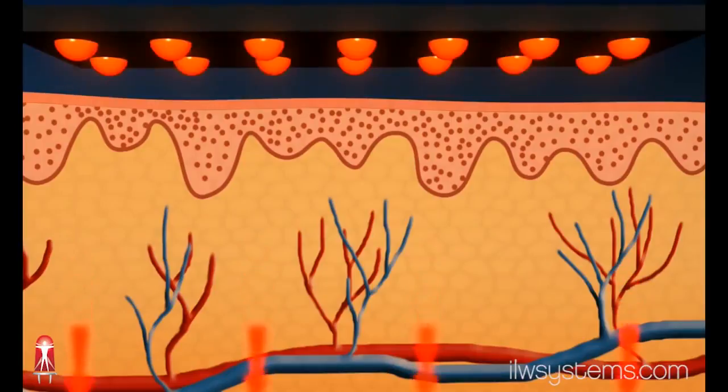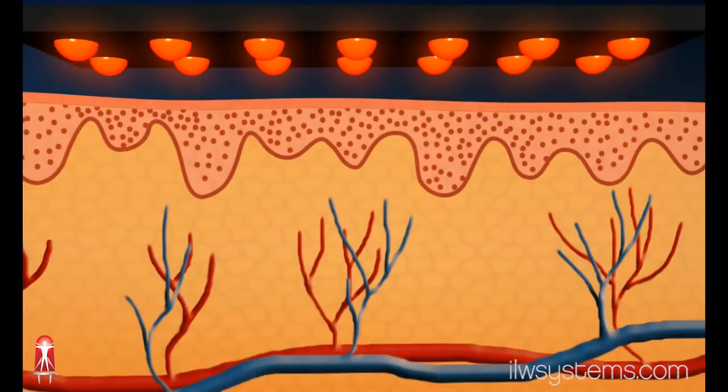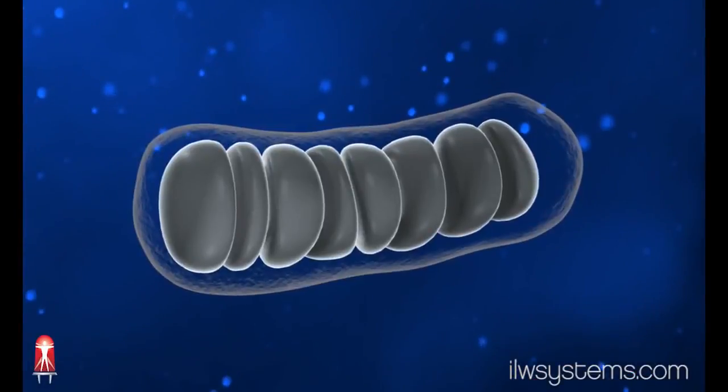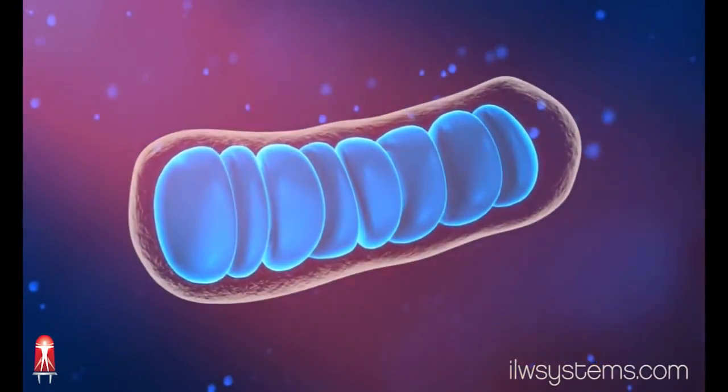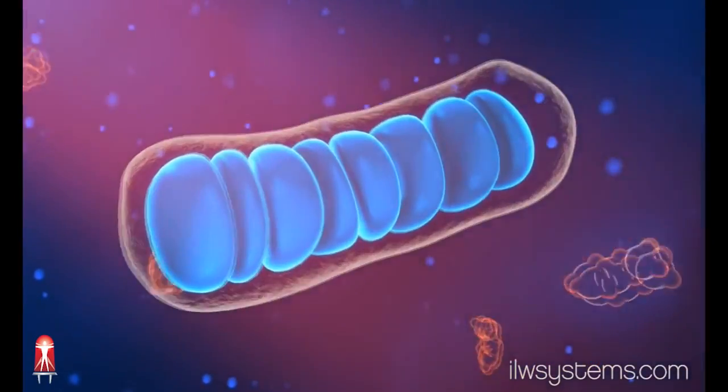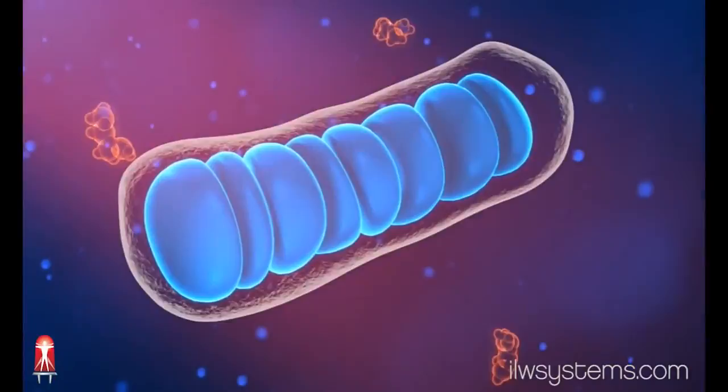Because the mitochondria are very sensitive to light, infrared light therapy can stimulate ATP production in the mitochondria, that is, if the nerves receive glucose and oxygen through increased blood flow to the nerves.